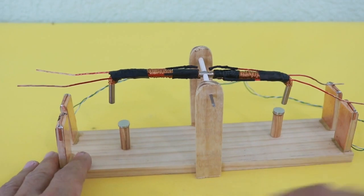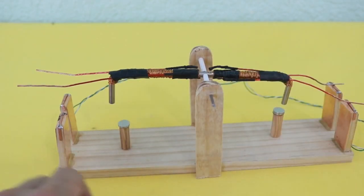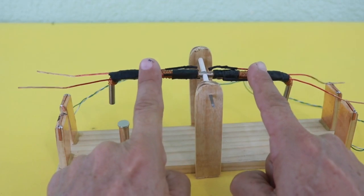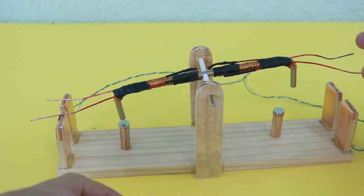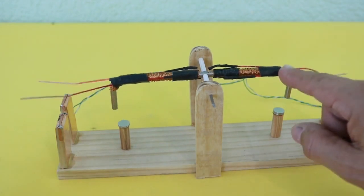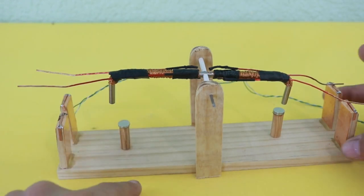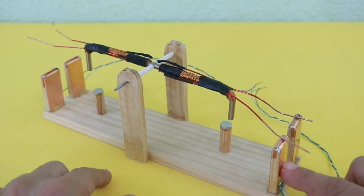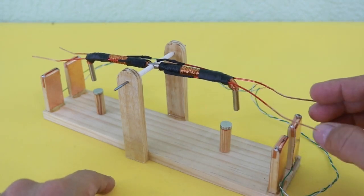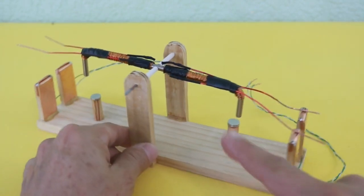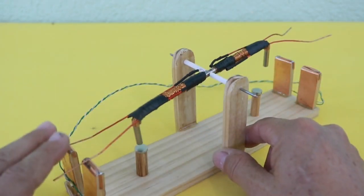We have here an iron core in the shape of a C, and we have two independent coils. These two wires are the connections for the coil and here we have the connections for the other coil. And I have two posts at each side where the wires make contact and the coil is energized. The same happens on the other side.